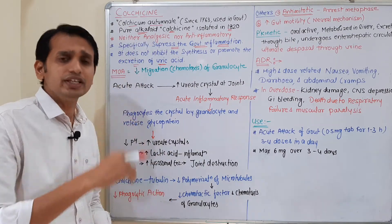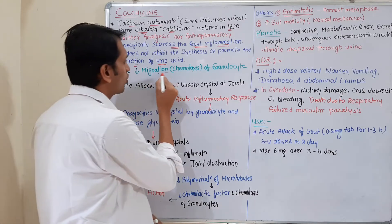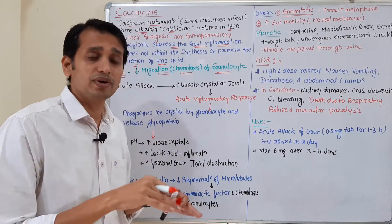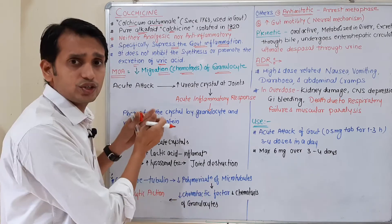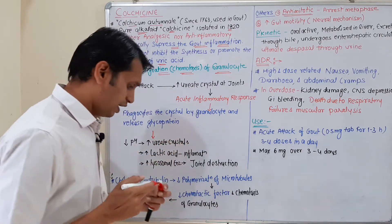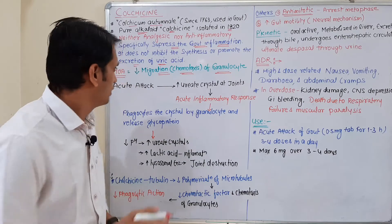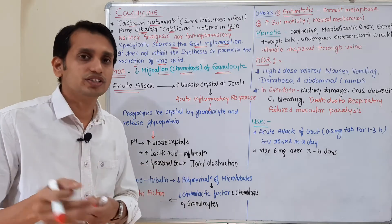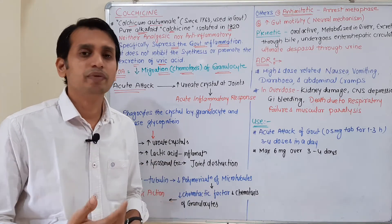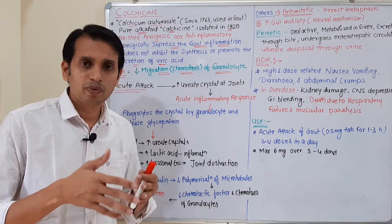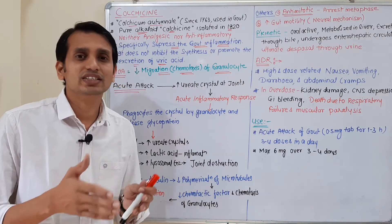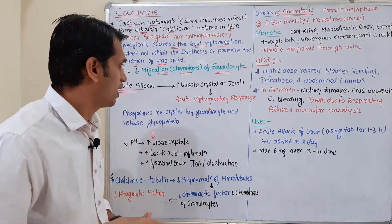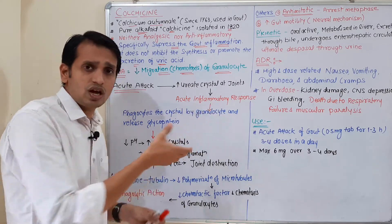Colchicine decreases or inhibits the migration of granulocytes and further decreases the inflammation process and inflammatory sequences of acute gout. In acute gout, a sudden occurrence of pain at the joint site happens, because uric acid crystals increase in the synovial fluid at the joints.